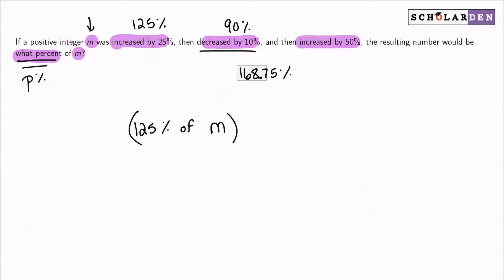again, referring to 100% as the original, we have 150%. So what we are doing here is doing 90% of this and then taking 150% of this, just like that.